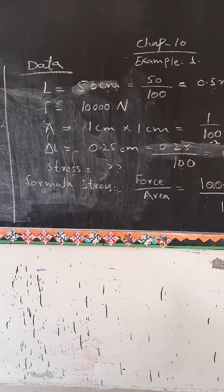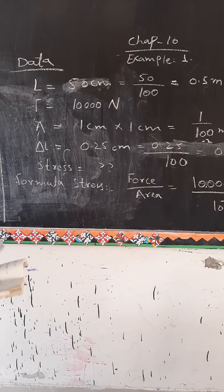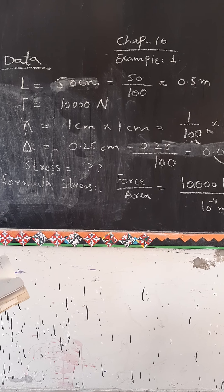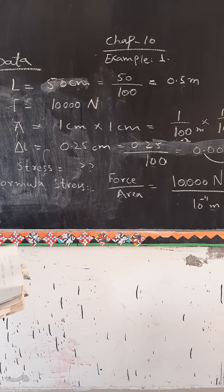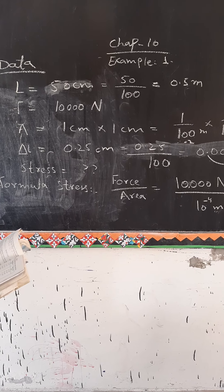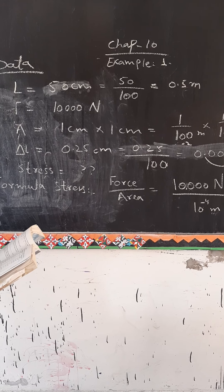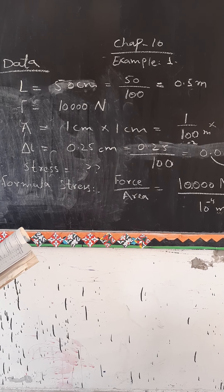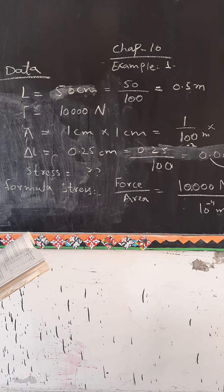Hello. Now the first example of chapter number 10. Example 153: The area of cross section of a metallic bar is 1 cm by 1 cm. Its length is 50 cm.